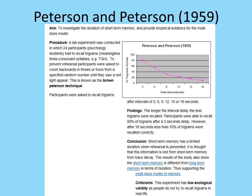Participants were then asked to recall the trigrams. Findings showed that participants asked to remember trigrams after only a three-second delay remembered 80% of them. However, after 18 seconds, less than 10% of trigrams were recalled. This suggests that trigrams recalled within three seconds were held in short-term memory, but once 18 seconds passed — the duration of short-term memory — only 10% were remembered. The information that wasn't recalled was not passed into long-term memory and therefore decayed and was forgotten.